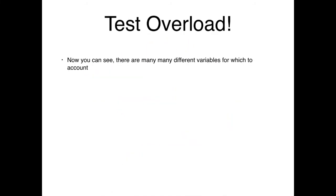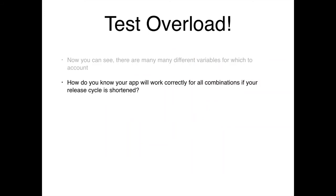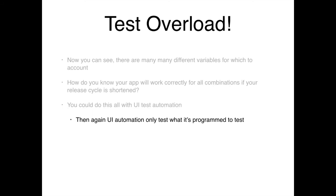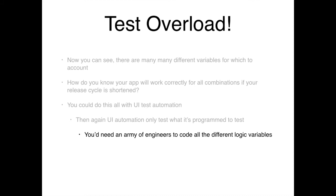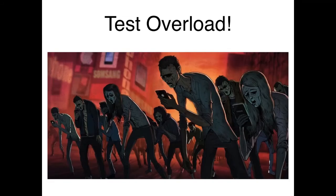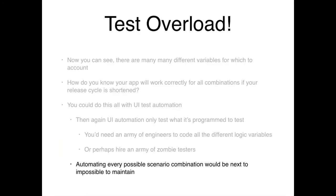Test overload: you can see there are so many different variables — how are you going to test all these different combinations in such a shortened release cycle? You could possibly do this with UI test automation, but UI automation only does what you program it to. You'd need a large army of engineers to pull off all the different combinations. And even if you could, automating every scenario would be next to impossible to maintain — if your app changed in a future release, you'd have a ton of technical debt to refactor.